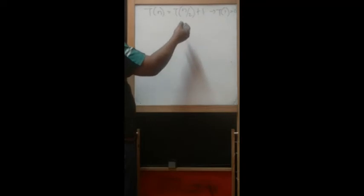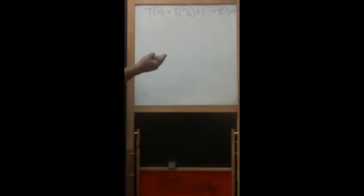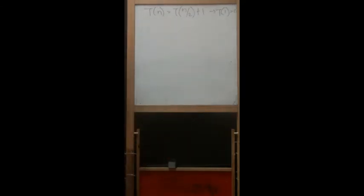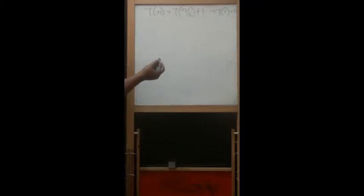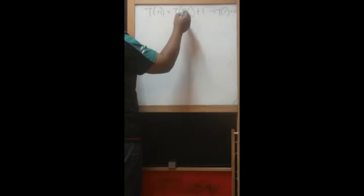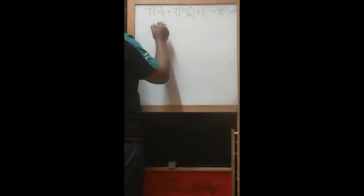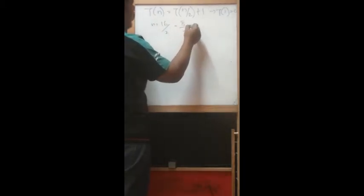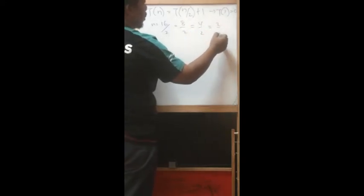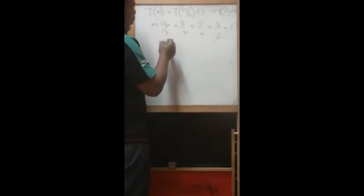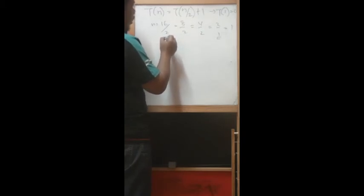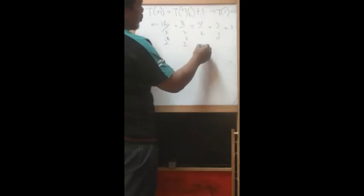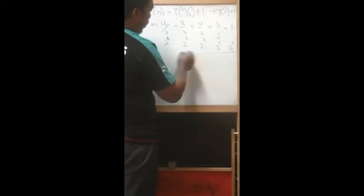We have to find a way to change this so we can get the standard form - recurrence in terms of k minus 1, k minus 2, and so on until reduced. But now we cannot use the back substitution directly because back substitution is based on that standard recurrence relation form. So we have to be creative - there is no standard way. Let's trace this: if n equals 16, divided by 2 is 8, divided by 2 is 4, divided by 2 is 2, divided by 2 is 1. So 16 equals 2 to the power of 4, then 2 to the power of 3, 2 to the power of 2, 2 to the power of 1, and 2 to the power of 0. These are the patterns.